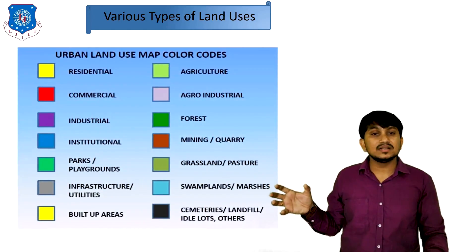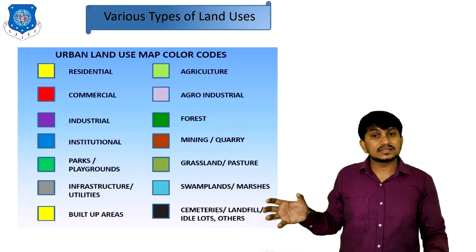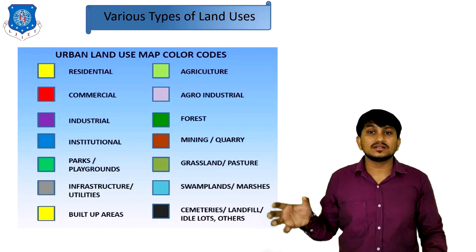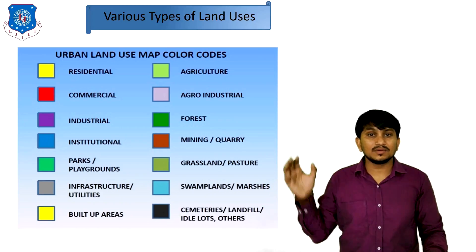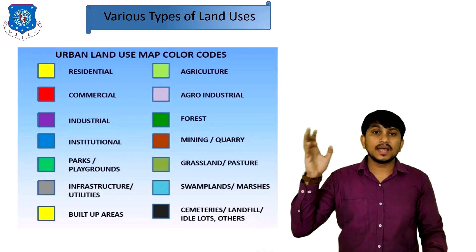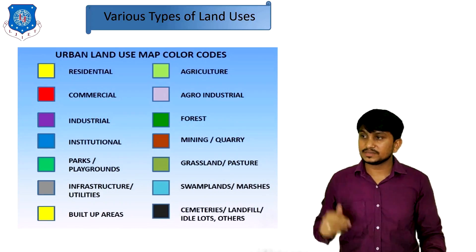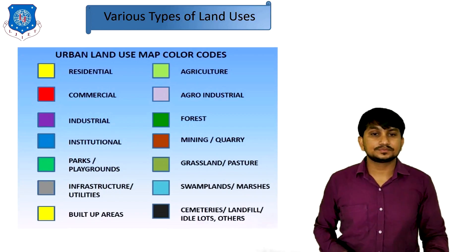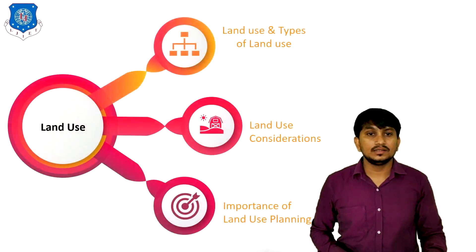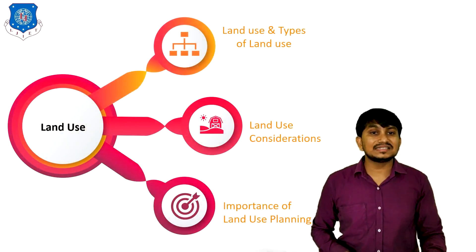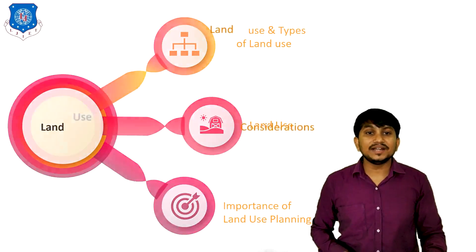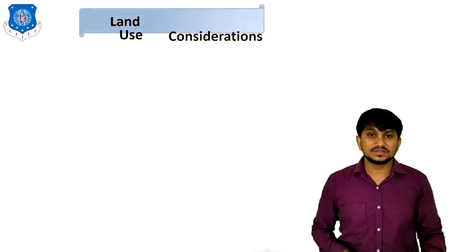These various uses are represented in different colors in the urban land use map color codes. Each type of use is shown in a distinct color on the map to identify different zones across the town.